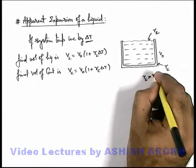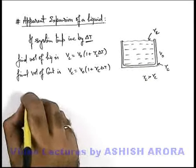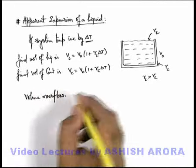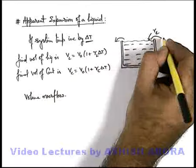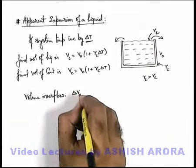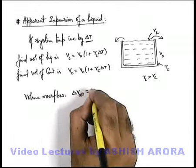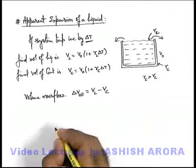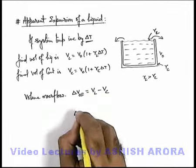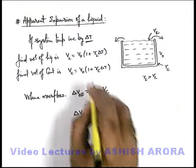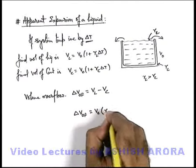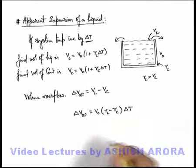So as gamma l is more than gamma c, we can write the volume overflow, because certainly some volume will overflow due to the more expansion in liquid. This volume overflow delta V_OF can be written as final volume of liquid minus final volume of container. We substitute the values here. This total volume overflow can be written as V₀ gamma liquid minus gamma container into delta t.